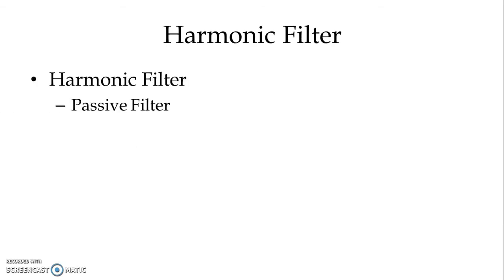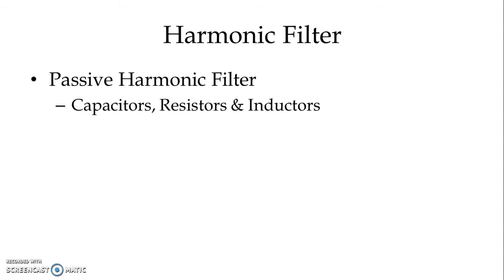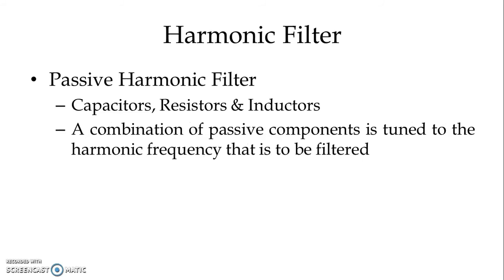We have a harmonic filter. Broadly, if we classify it, we have passive harmonic filters as well as active harmonic filters. In passive harmonic filters, as the name indicates, we use passive elements like capacitors, resistors, and inductors. A combination of passive components is tuned to the harmonic frequency that is to be filtered.